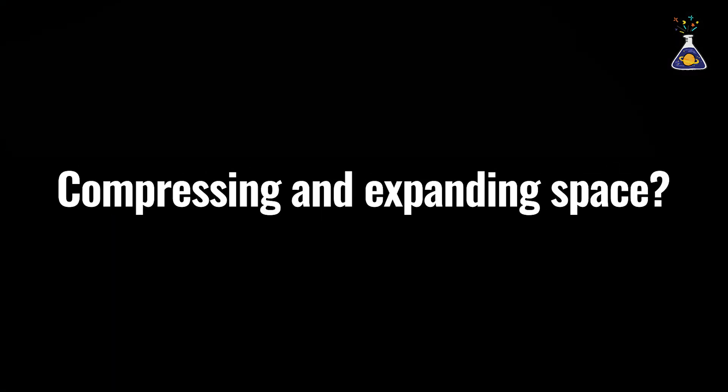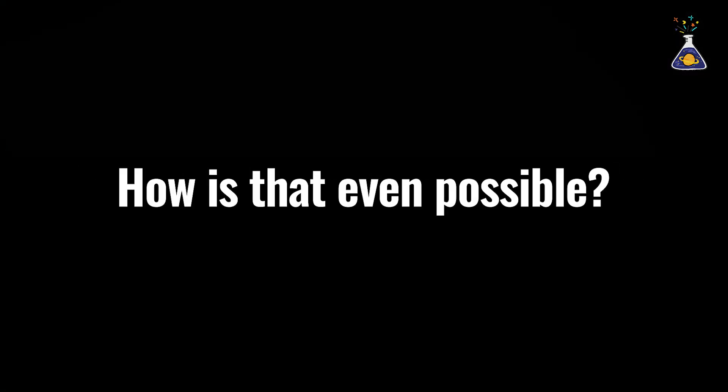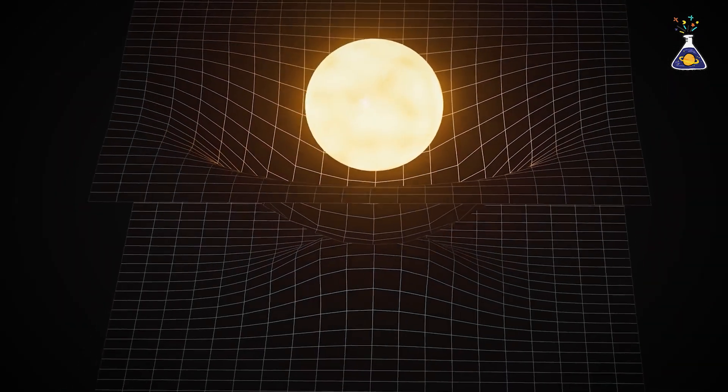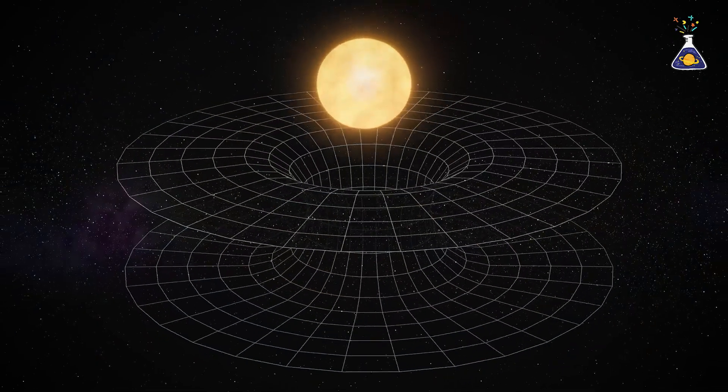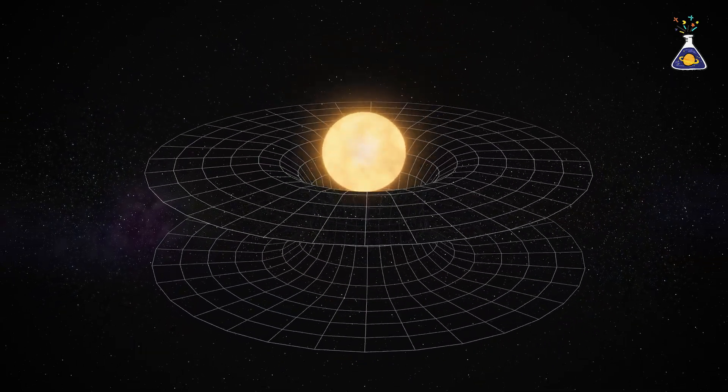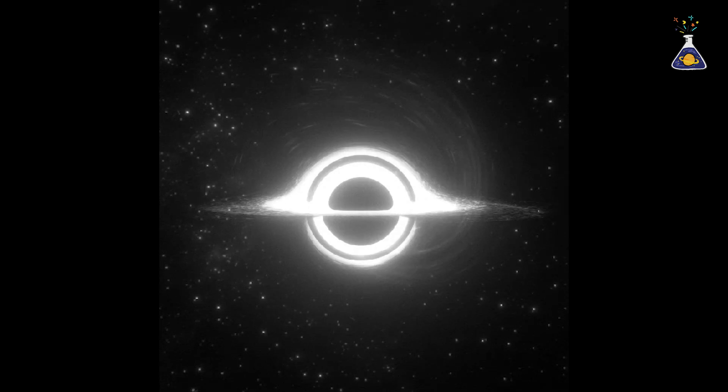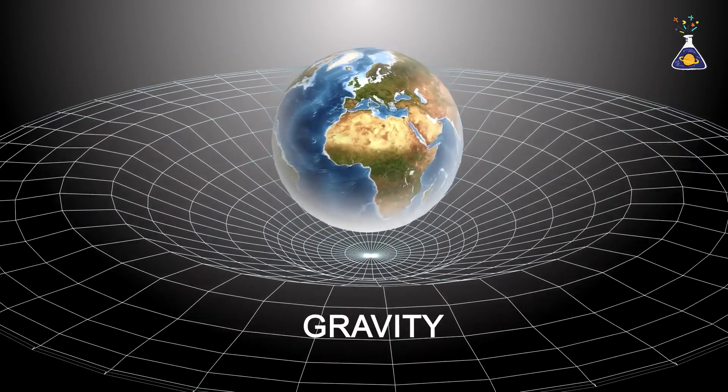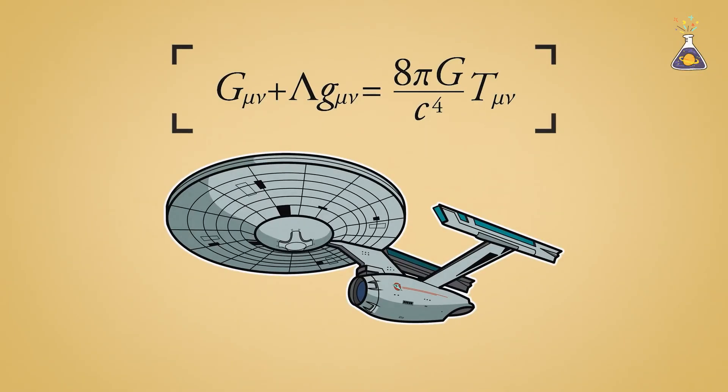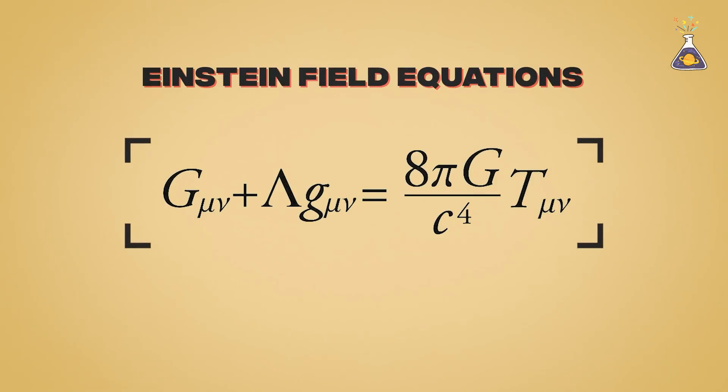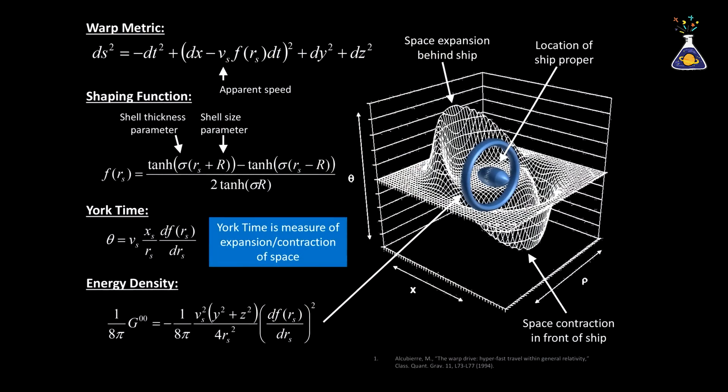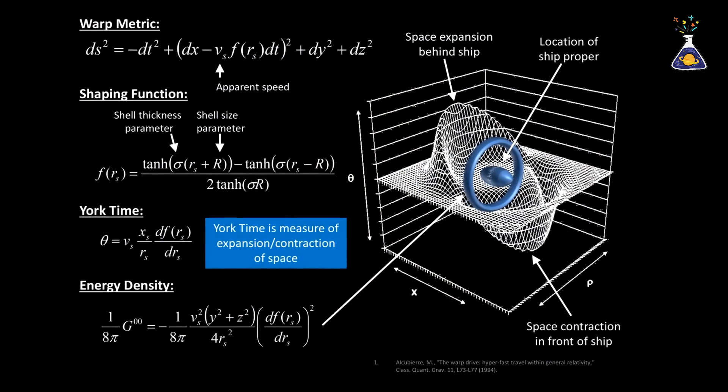At this point, you might wonder: compressing and expanding space? How is that even possible? According to Einstein's general theory of relativity, space is a flexible entity. It can be compressed or expanded. It's the warping of space that explains why extreme objects like black holes and galaxies arise, why space itself can expand, and why gravity pulls planets and stars together. The Alcubierre Drive is based directly on this theory of general relativity. Using Einstein's equations, Alcubierre discovered a solution that locally compresses and expands space around a spacecraft.